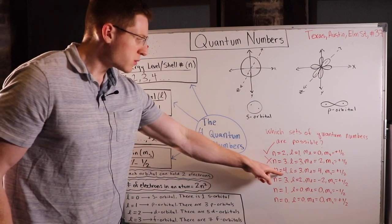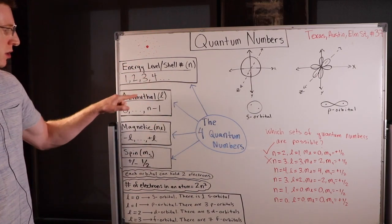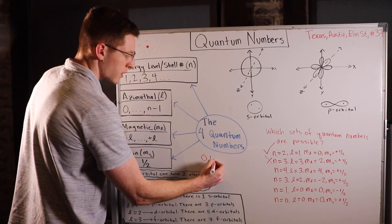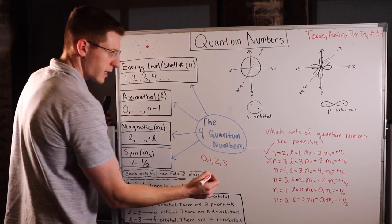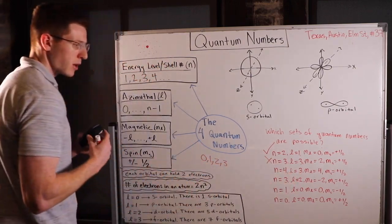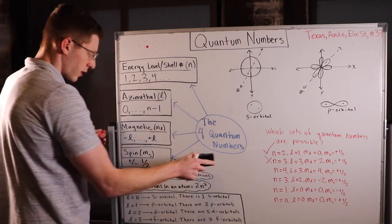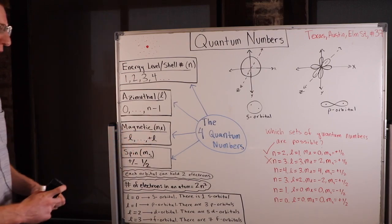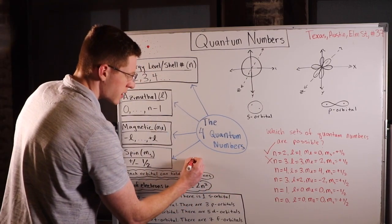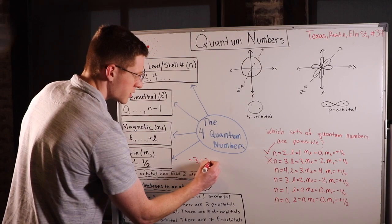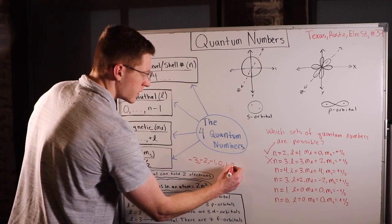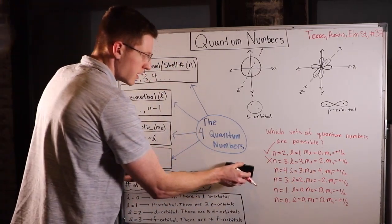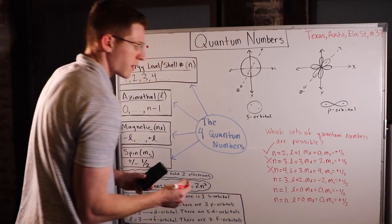The third example: N equals 4, L equals 3, M sub L equals 4. If N equals 4, L can be 0, 1, 2, or 3 — so L equals 3 checks out. But if L is 3, M sub L must range from negative 3 to positive 3: negative 3, negative 2, negative 1, 0, 1, 2, or 3. You can't have M sub L equal 4, so this is also not a possible set of quantum numbers.